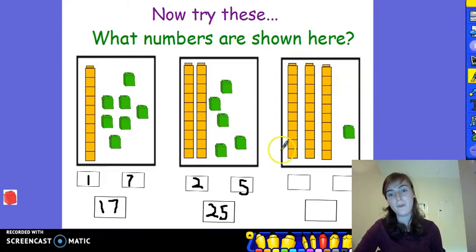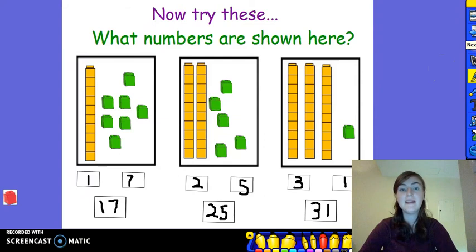And finally, I can see 1, 2, 3 tens. And just 1 cube by itself. I know that there are 31 cubes in the last box.